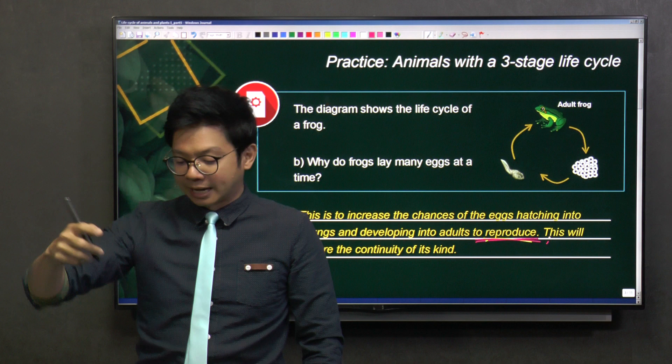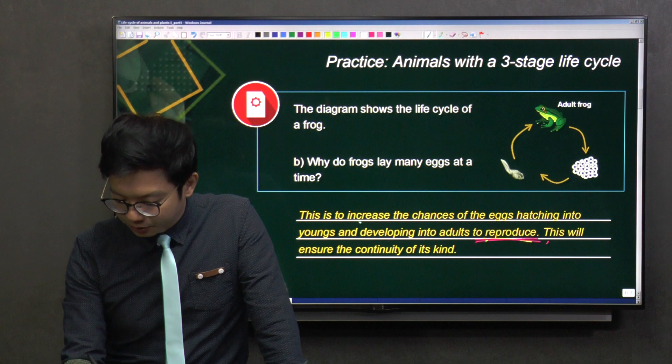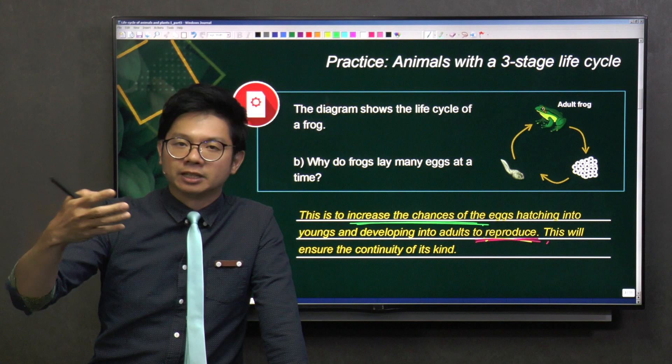Because only after it reproduces can it ensure the continuity of its kind. So let me highlight the keywords for you. You have to talk about increasing the chance of what - not just survival.